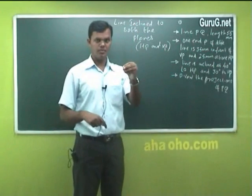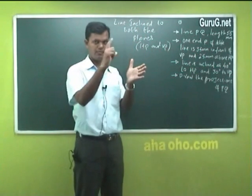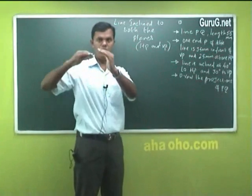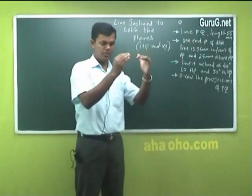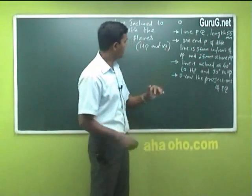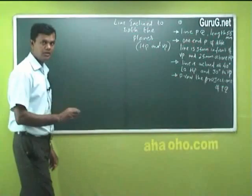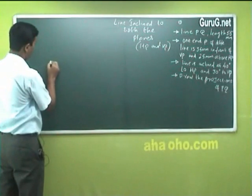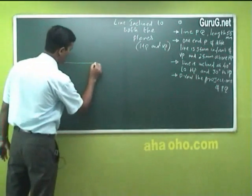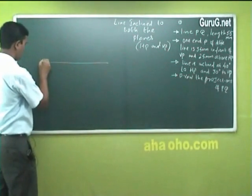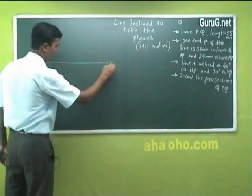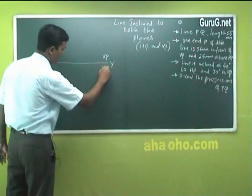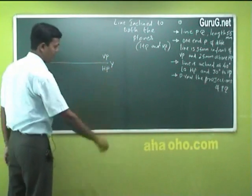We have learned about four quadrants — first, second, third, fourth. What do you mean by in front, what is above, what is behind, what is below — all we have learned. Now, you draw a line XY, a long line, indicating the vertical plane and horizontal plane.